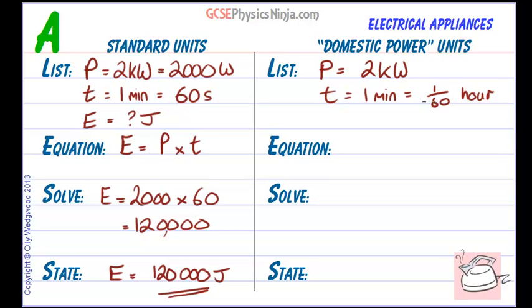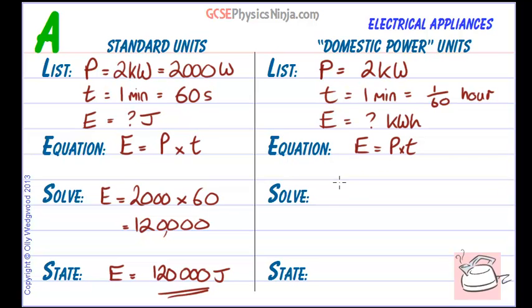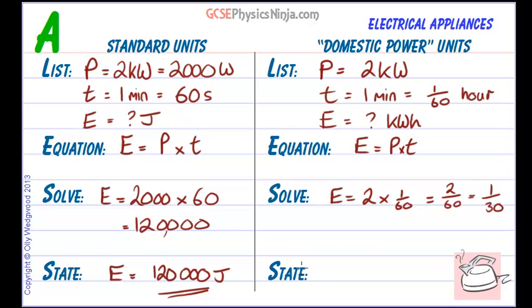One minute equals one sixtieth of an hour — you could work that out on a calculator to get a decimal if you wanted. What are we finding? Energy, and the unit we'll get is kilowatt hours — that's the unit of energy in domestic power units. The equation as before is E equals P times T. Putting the numbers in: 2 kilowatts times 1 over 60, which gives 2 over 60, which equals 1 over 30.